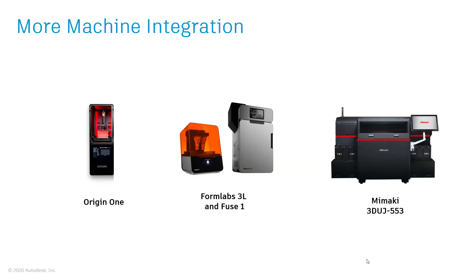The first focus area was integrating new machines. We worked with three different vendors: Origin, Formlabs, and Mimaki. From Origin, we have Origin 1, which is an SLA printer. From Formlabs, we have two new printers: the Form 3L, which is a large format SLA, and the Fuse 1, which is an SLS printer. And from Mimaki, we have a UV curable inkjet printer that is full color, integrated into NetFab.